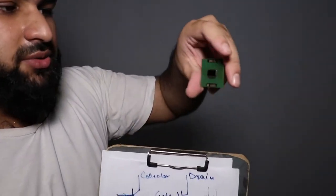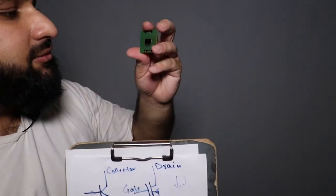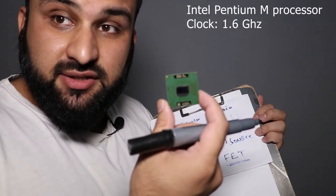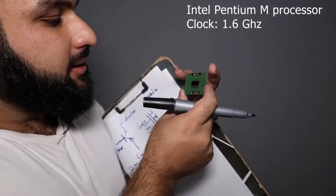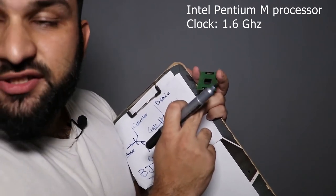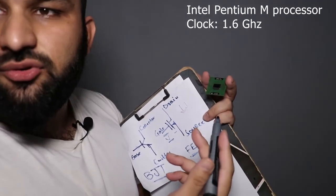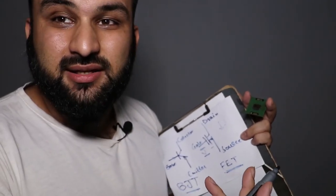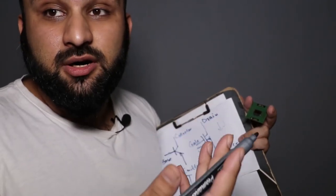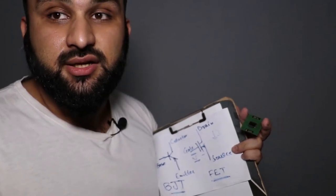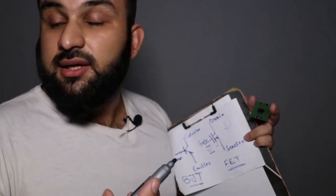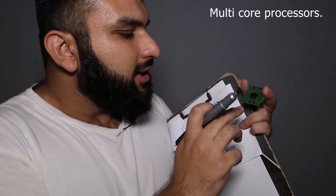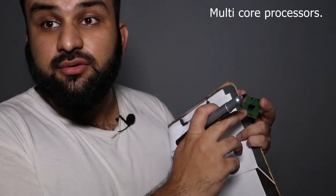For example, this is an Intel Pentium M processor — obviously a very old one. This processor has a clock speed of 1.6 gigahertz. By today's standards that's not up to the mark, because today we're not talking about single-core processors — we're talking about multi-core processors. The clock speed stays around that range, but what's the difference?